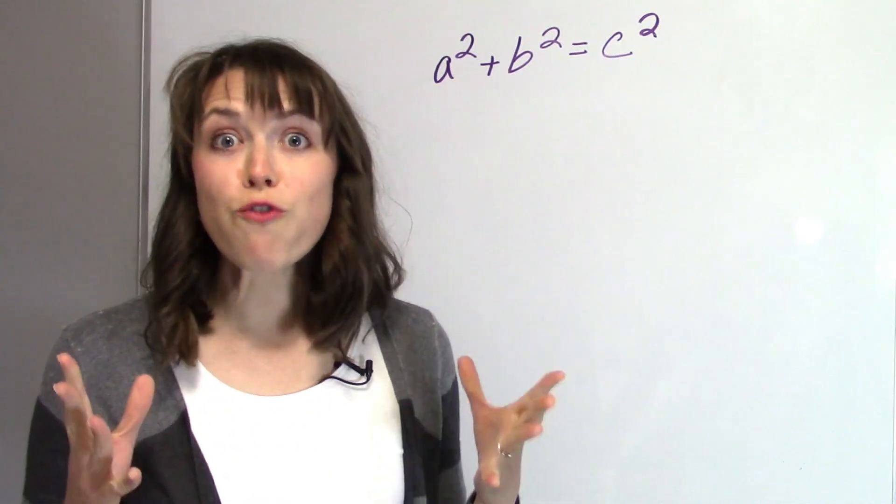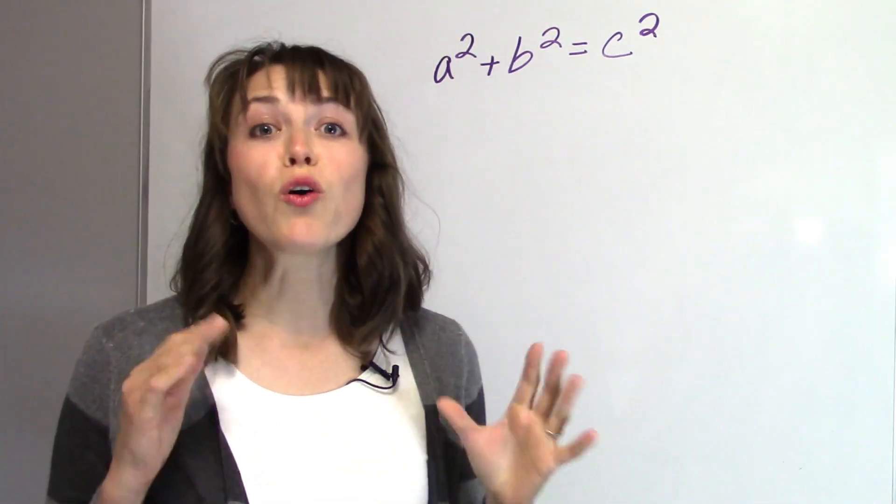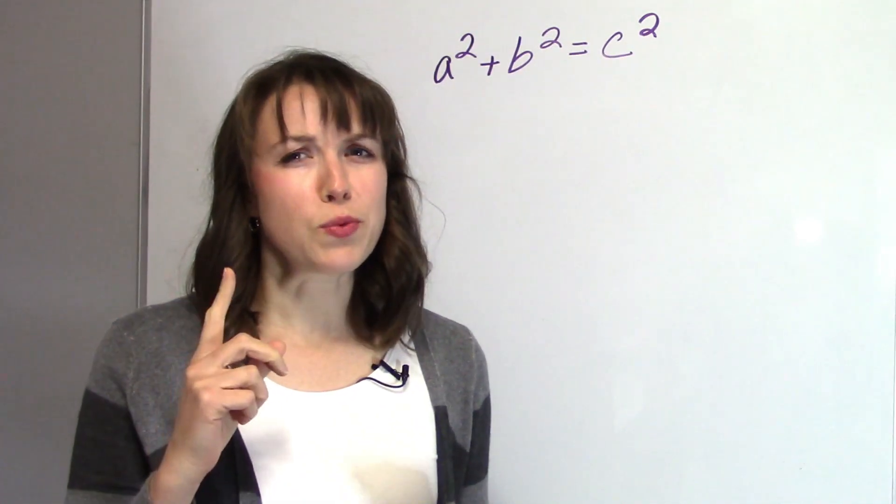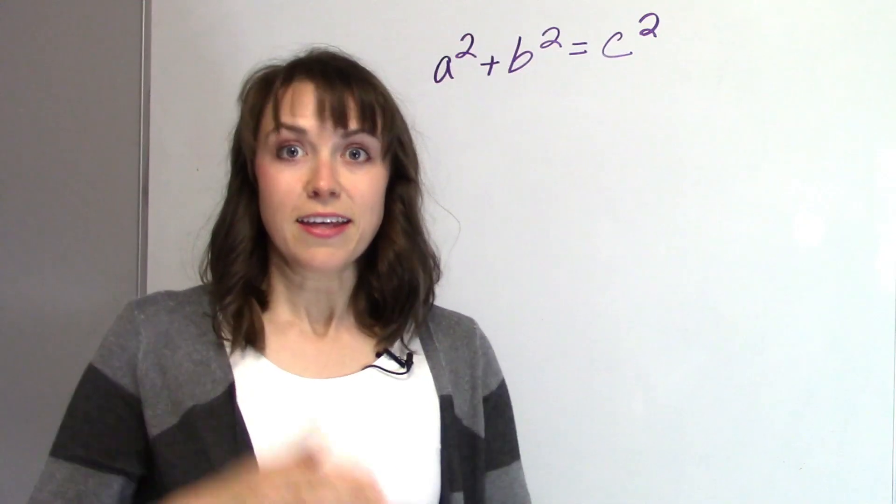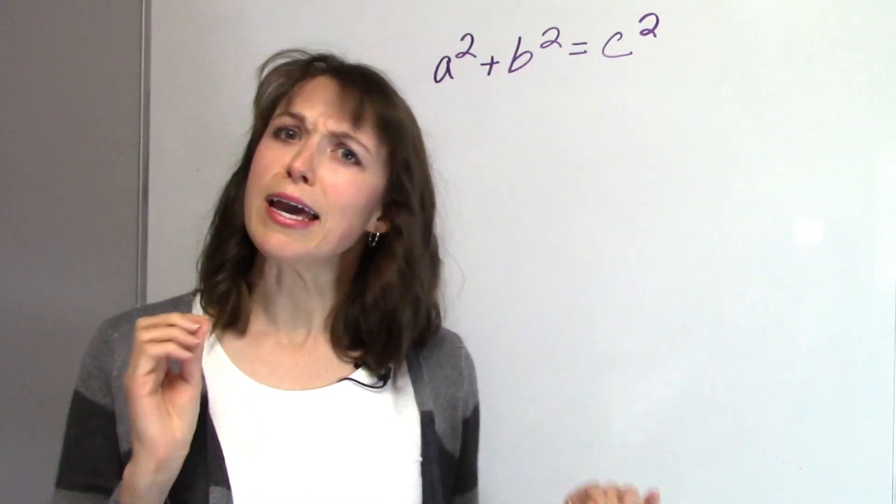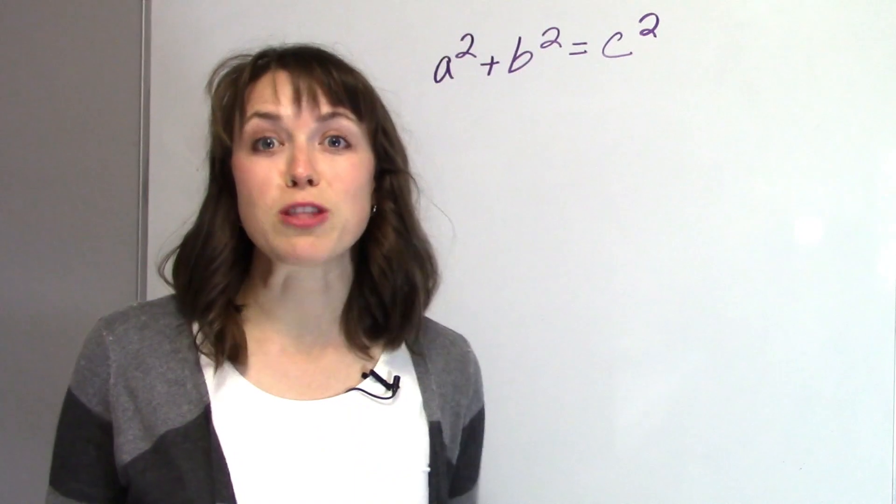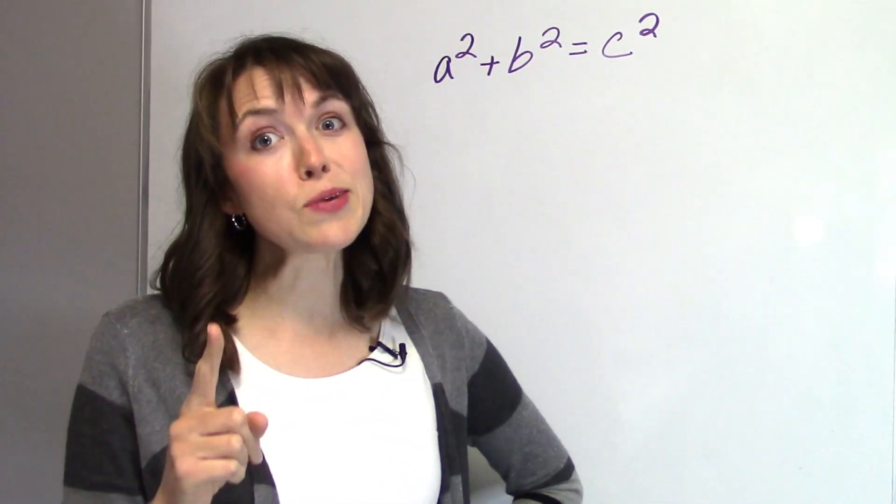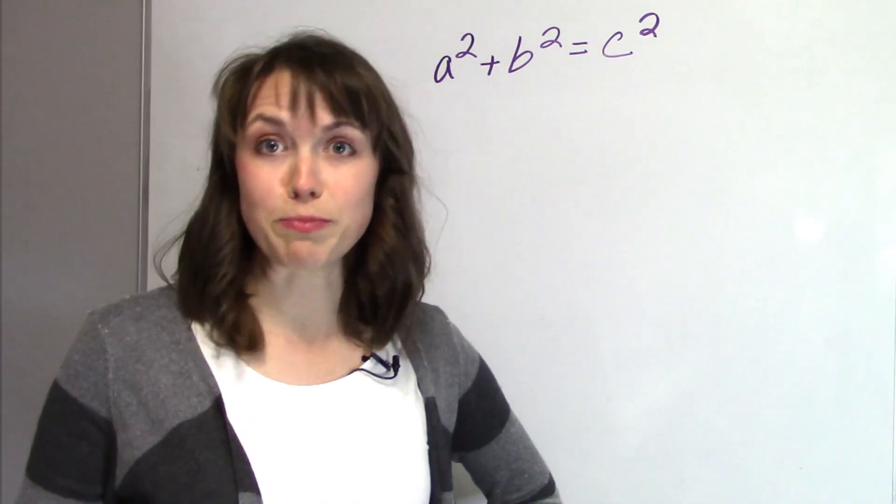So in the Wizard of Oz, at the very end, the scarecrow gets a brain, right? And he says a few words. Some of the square roots of any two sides of an isosceles triangle is equal to the square root of the remaining side. Oh joy, actually I've got a brain. That's it. That's the Pythagorean theorem. I mean, it's not exactly accurate the way he said it, but that's what he's going for, the Pythagorean theorem. So if you have this down, according to the Wizard of Oz, you've got a brain and you must be smart.